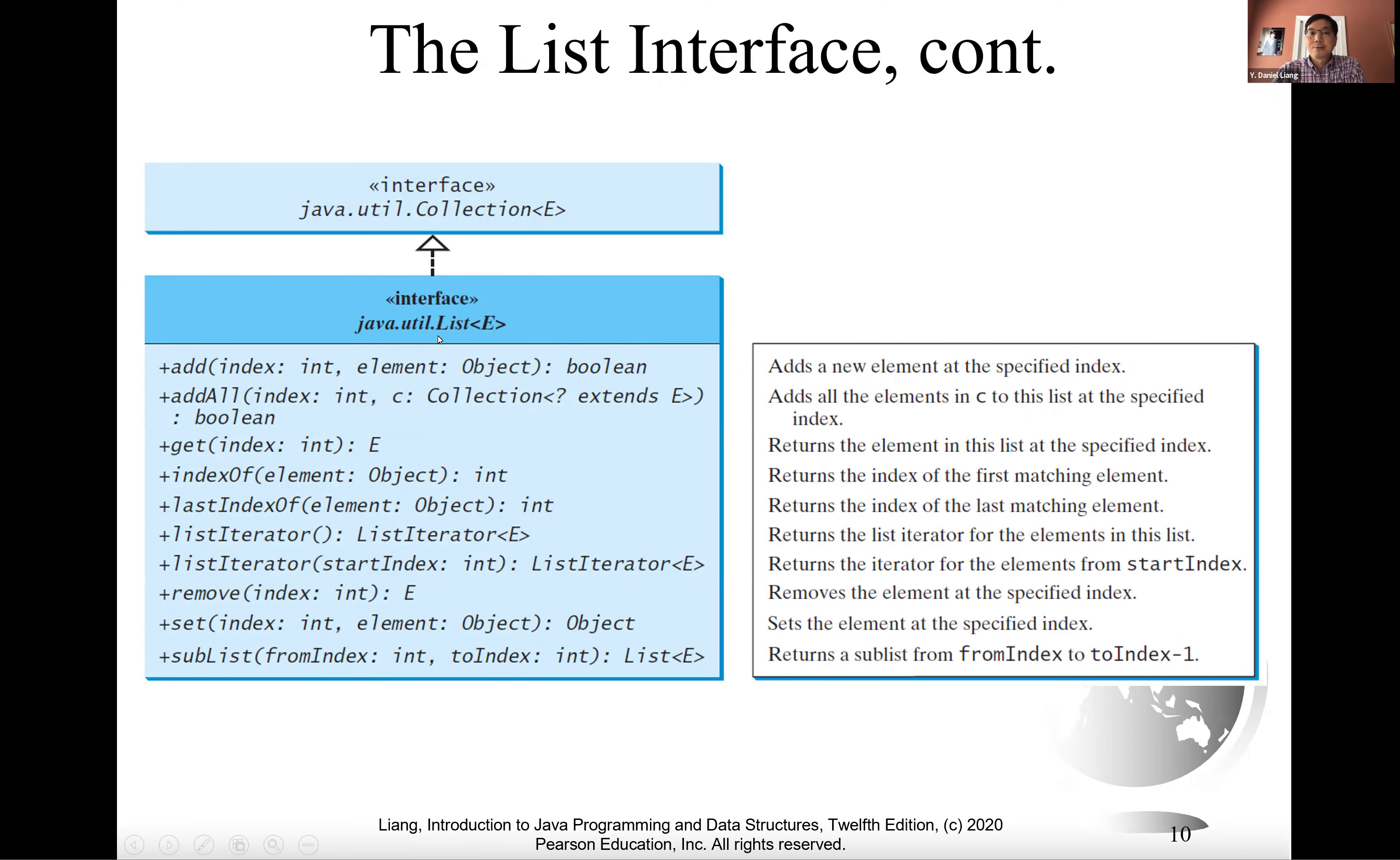This is the UML diagram for the list interface. It is a sub-interface of the collection interface. In addition to all the methods in the collection interface, the list interface defines add an element into this index, add all the elements in collection C into this index, get index, index of, and last index of.